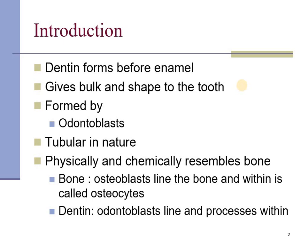The dentine forms before the enamel. After the amelogenesis, the dentine continues to grow and gives bulk and shape to the tooth. It is formed by odontoblasts which are differentiated from the dental papilla cells. Unlike enamel, dentine is tubular in nature.